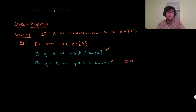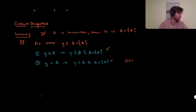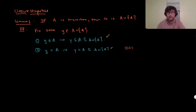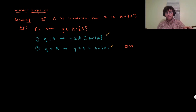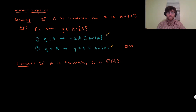Another closure property: if we have a transitive set, we can take its power set and also get something transitive. Lemma 2: if A is transitive, then so is the power set of A. What's the proof?